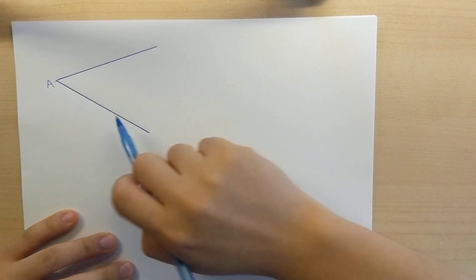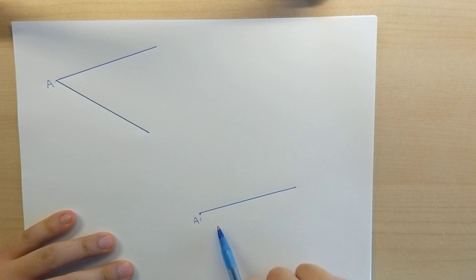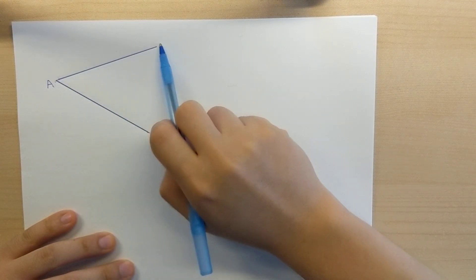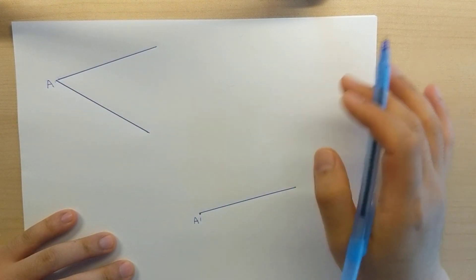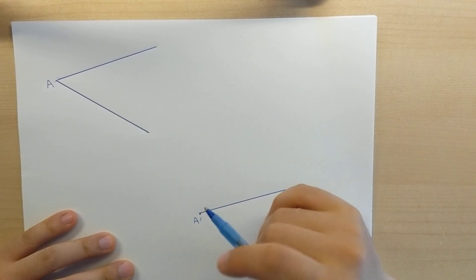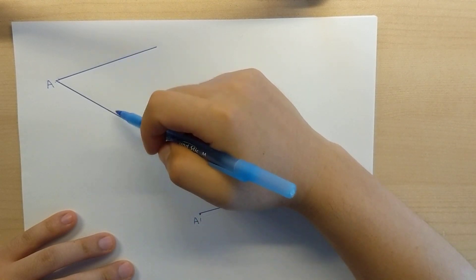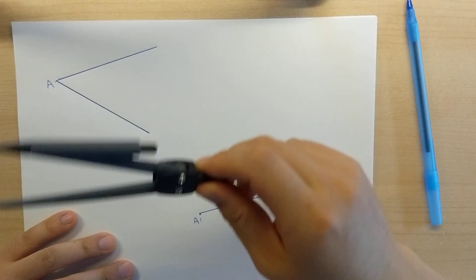Now I have no idea what this length is. I don't know whether it is the same length as this line or whether it's longer or shorter. It really doesn't matter. What I want to do is I want to copy the opening. How are we going to do that?